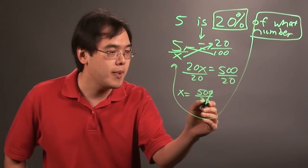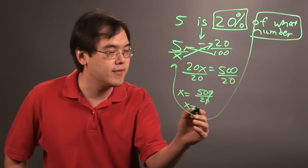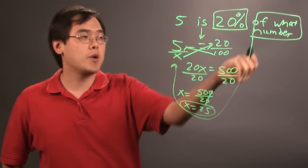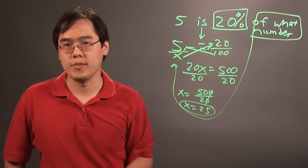The zeros cancel, and then 50 over 2 is going to give you 25. So x is 25. So, 5 is 20% of what number? That number is going to be 25.